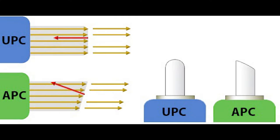Within the various types of connectors, you can choose to purchase ones that are either angled physical contact (APC) or ultra-physical contact (UPC). The main difference between the two is the fiber end face or the angle. APC connectors feature a fiber end face that is polished at an 8-degree angle, while UPC connectors are polished with no angle.